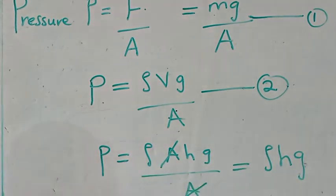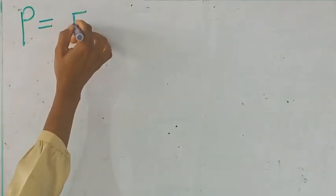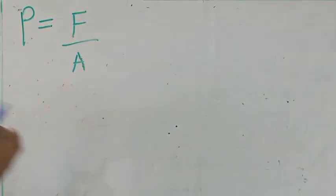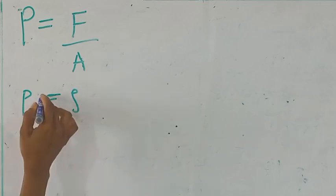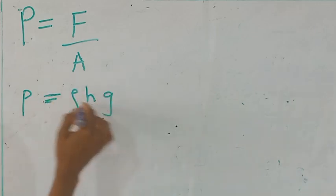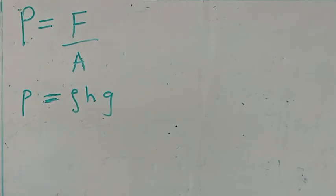Please note this, that pressure is equal to rho h g. Before we solve some calculations, I want you to note these units of pressure. Pressure is equal to force over area. And we have gotten another formula that pressure is density, that's rho h and g.